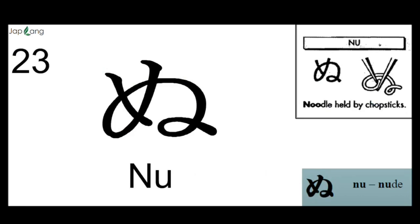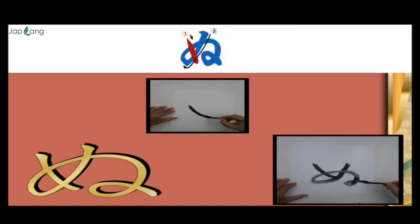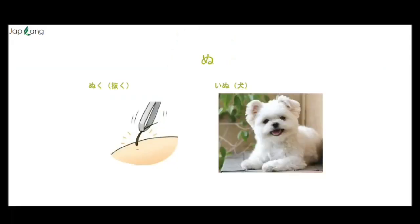Next is NU. You can see here a neutral head with chopsticks. NU as in NUDE — this is how we write NU. NU as in Nuku — something you pull out, you extract — that's called Nuku. You can also relate with INU — E, NU — INU means dog.